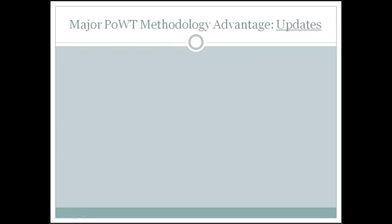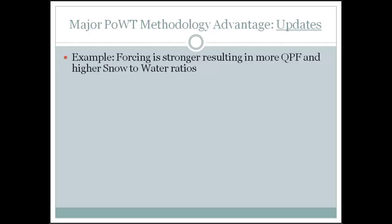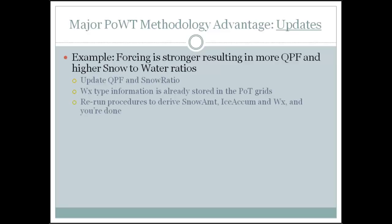This methodology is great for the updating process. You may have to make a time investment initially, but then you just tweak. For example, the next shift comes on and there's stronger forcing — more QPF and higher snow-to-water ratios impacting the dendritic growth layer. I go in, update the QPF and snow ratio grid. The probability of types are all fine — no need to change those. Then I rerun the step three and four procedures: snow amount and merge weather. And I'm done.